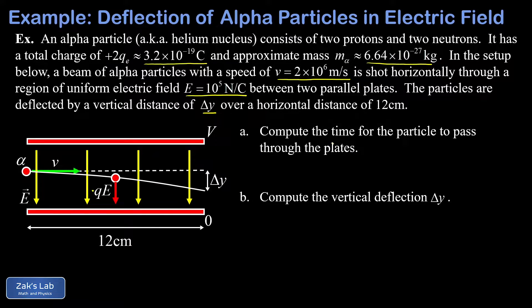So in part A, we're asked to compute the time for the particle to pass through the plates. And the key to this is to realize there's no acceleration in the X direction. So we can write down the equation of motion for the X coordinate of the particles. And that's X equals X naught plus V naught X T.